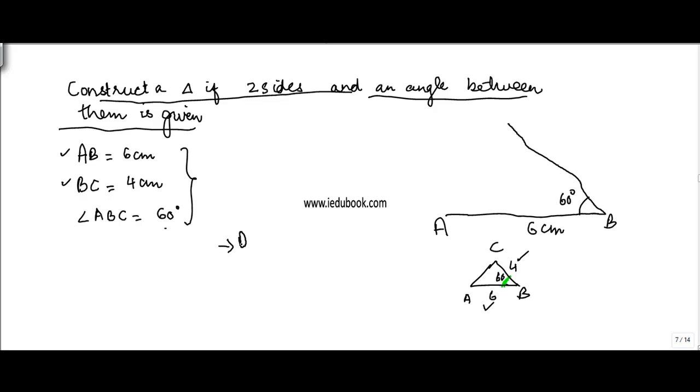So the steps were: draw AB equals to 6 cm, then draw angle B equal to 60 degrees.